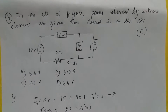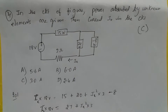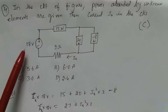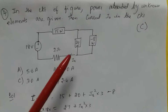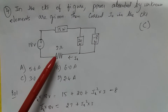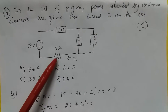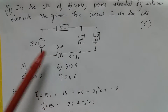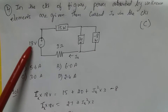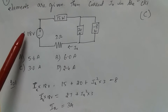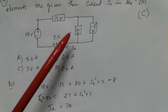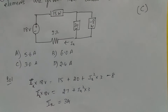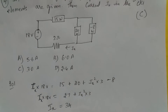In the circuit of the figure, power absorbed by unknown elements is given, and we need to find current Ix. We have 18 volts, with 15 watts, 20 watts, minus 8 watts, and 3 ohms. The power across the resistor is 3·Ix², and the power from the source is Ix·18. So Ix·18 = 15 + 20 − 8 + 3·Ix², giving Ix = 3 amps.